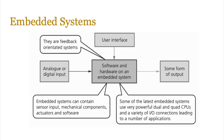Some of the latest embedded systems use very powerful quad-core or even octa-core CPUs, and they have a variety of input-output connections leading to a number of different applications. So they are blurring the boundary between what used to be a traditional embedded system targeting a single task and a multipurpose system in line with a modern computer. The final piece of the puzzle is feedback-oriented systems — there is some element of feedback that influences the use of an embedded system, so always include that in your answer.